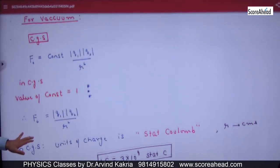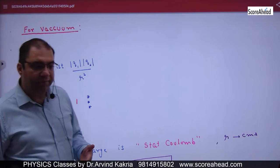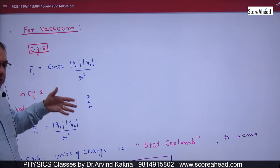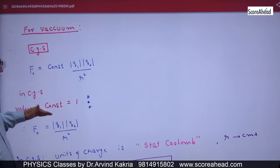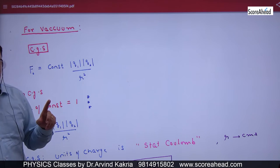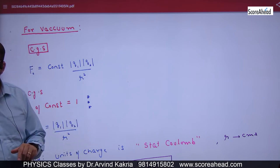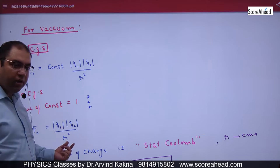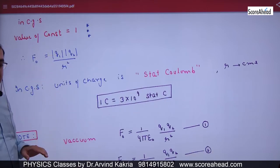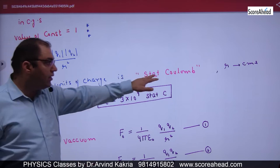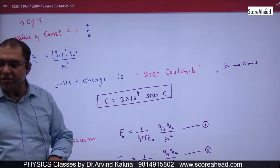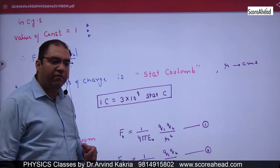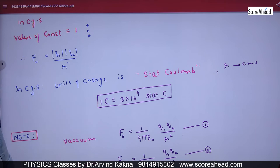For vacuum in the SI system, the constant is 1/(4πε₀). Now in the CGS system, for vacuum the constant value is simply 1, so F = Q1Q2/R². In SI, charge is in coulombs; in CGS, charge is in stat coulombs, and distance is in centimeters. Remember: 1 coulomb = 3 × 10⁹ stat coulombs.